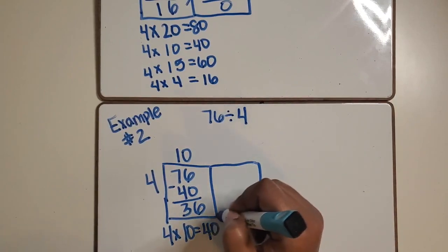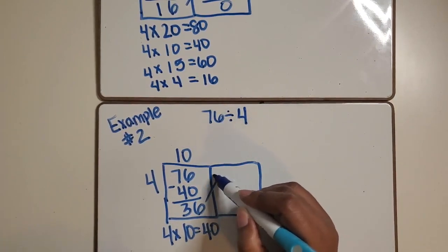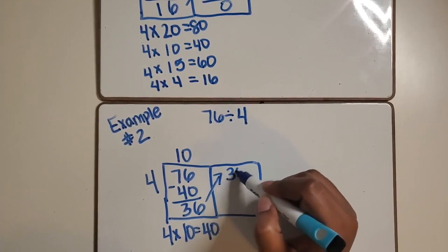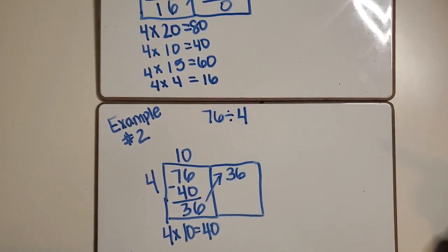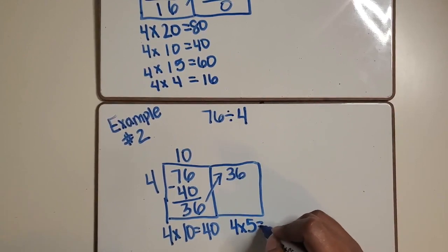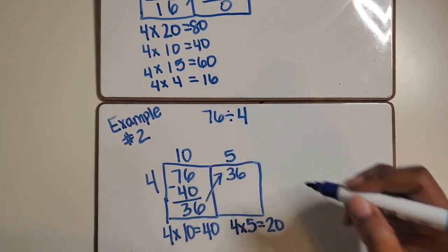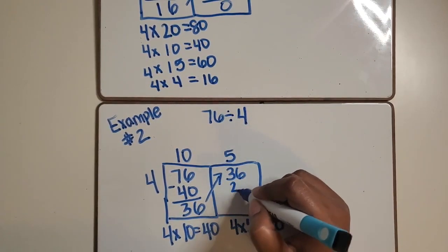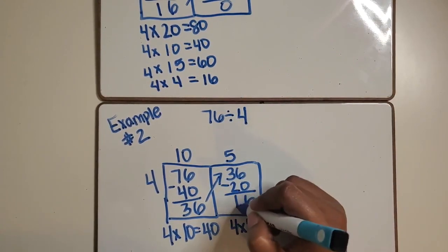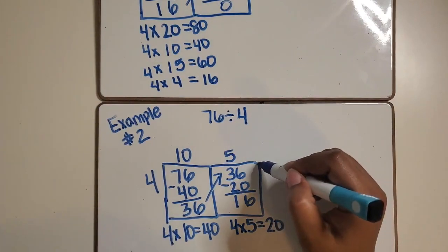We will need to extend our rectangle again and start with 36 as our total. Now we cannot use the 4 times 10 equals 40 because that is greater than 36. What about 4 times 5 equals 20? Many students are comfortable with the 5 facts. Four groups of 5 equals 20 and we can subtract that from 36 which will leave us with 16.